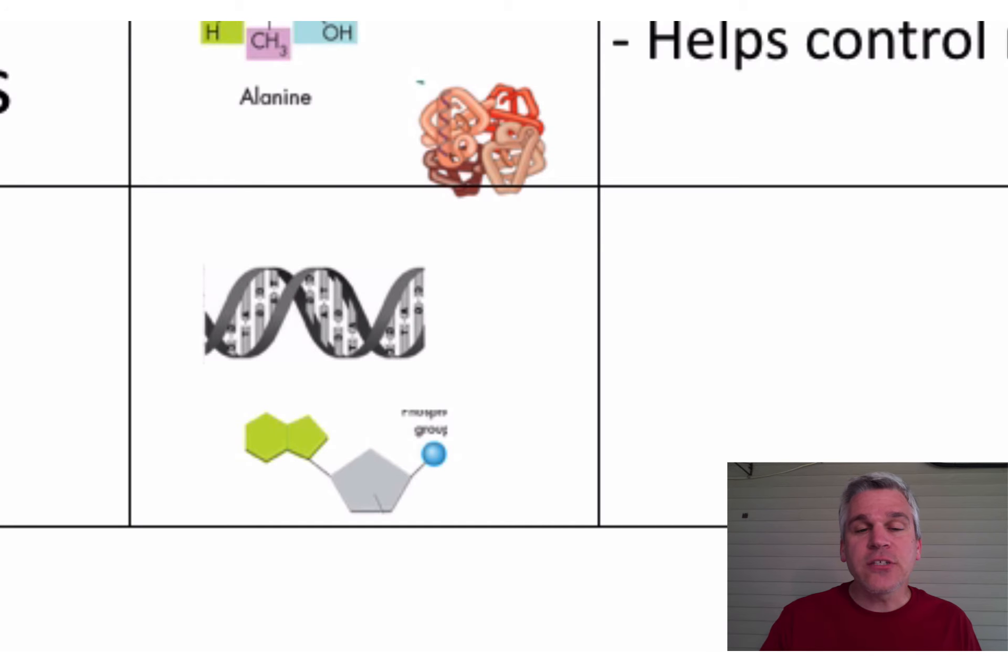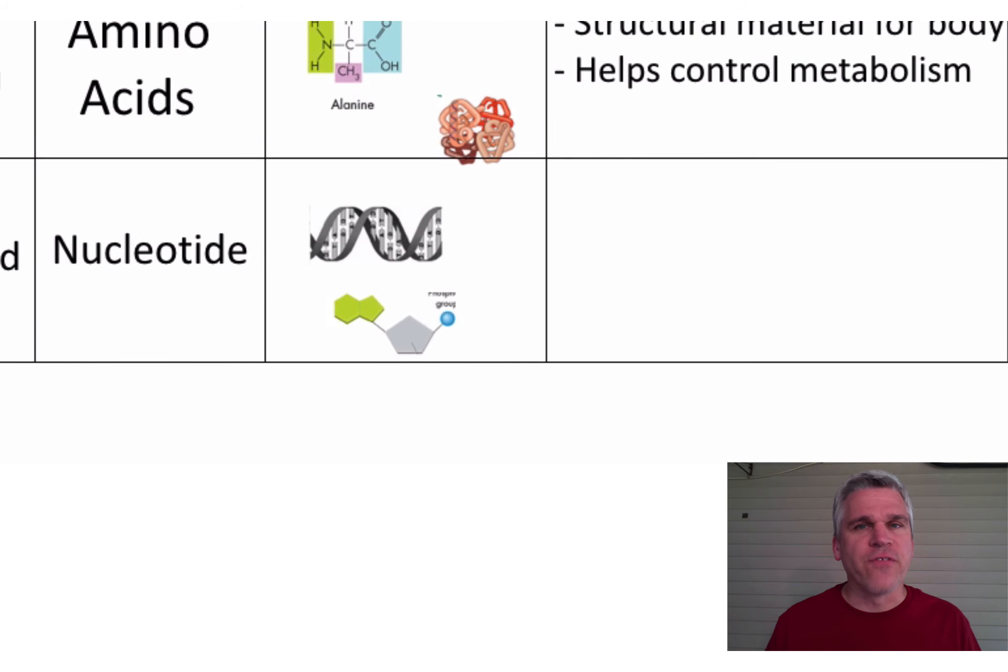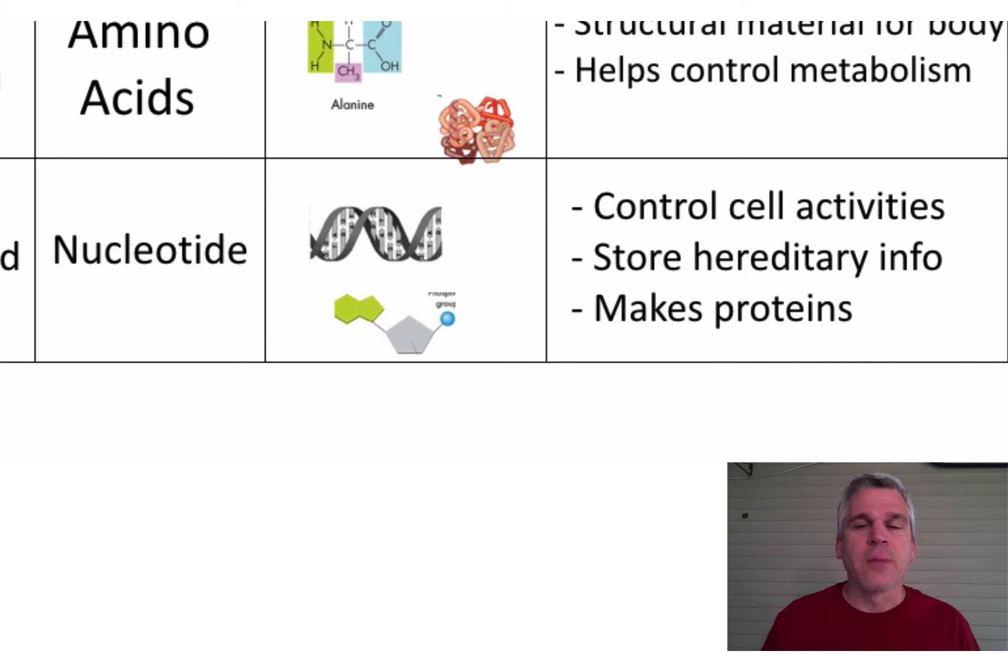Finally, that last one we see is a type of nucleic acid. All nucleic acids are made up of smaller molecules called nucleotides. Remember, these are very important molecules. They help to control all the things that are going on inside of our cells. They store our hereditary information, and they will ultimately make the proteins.